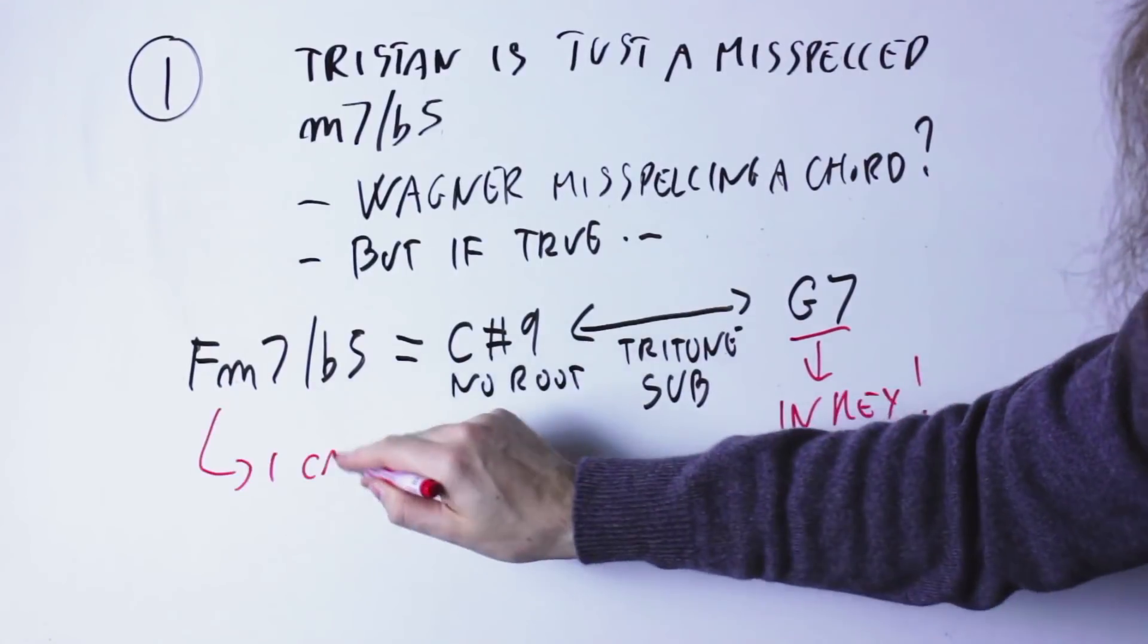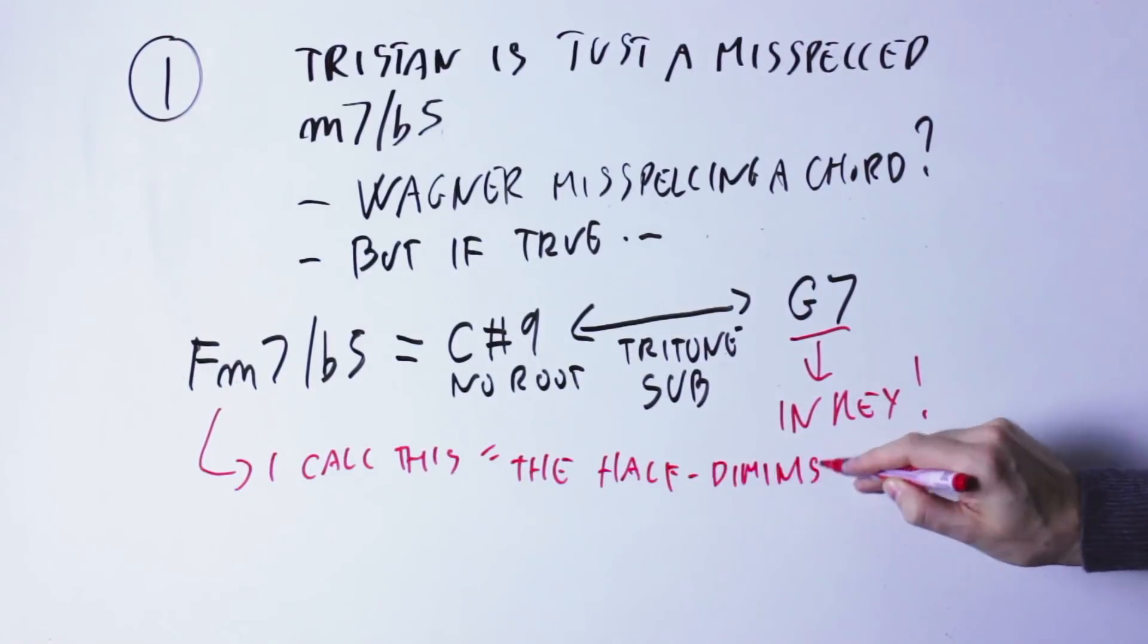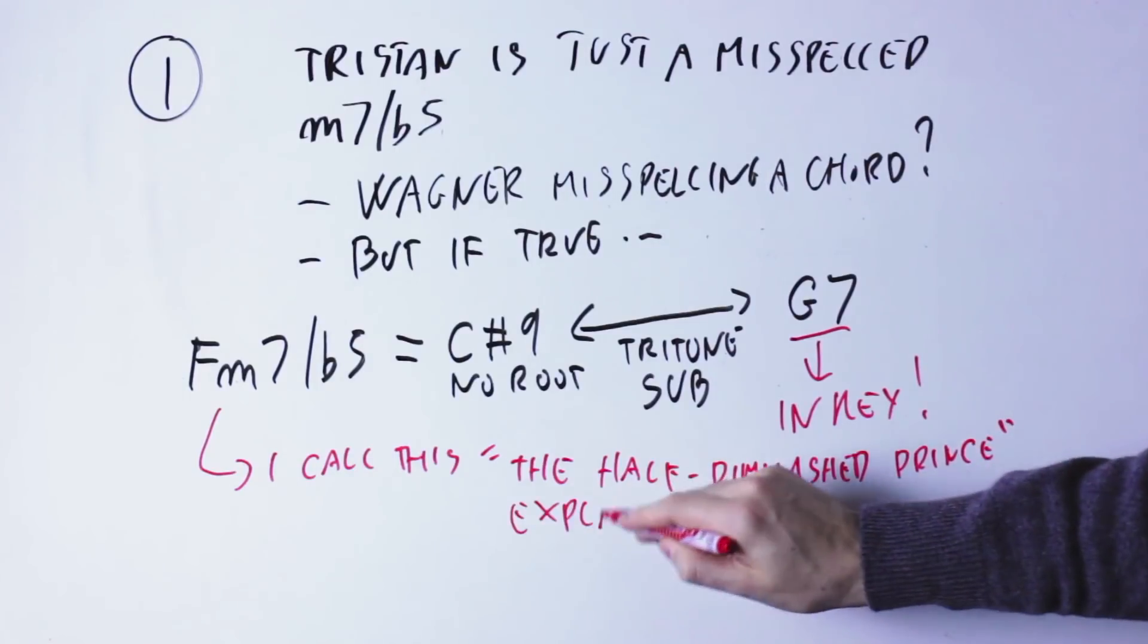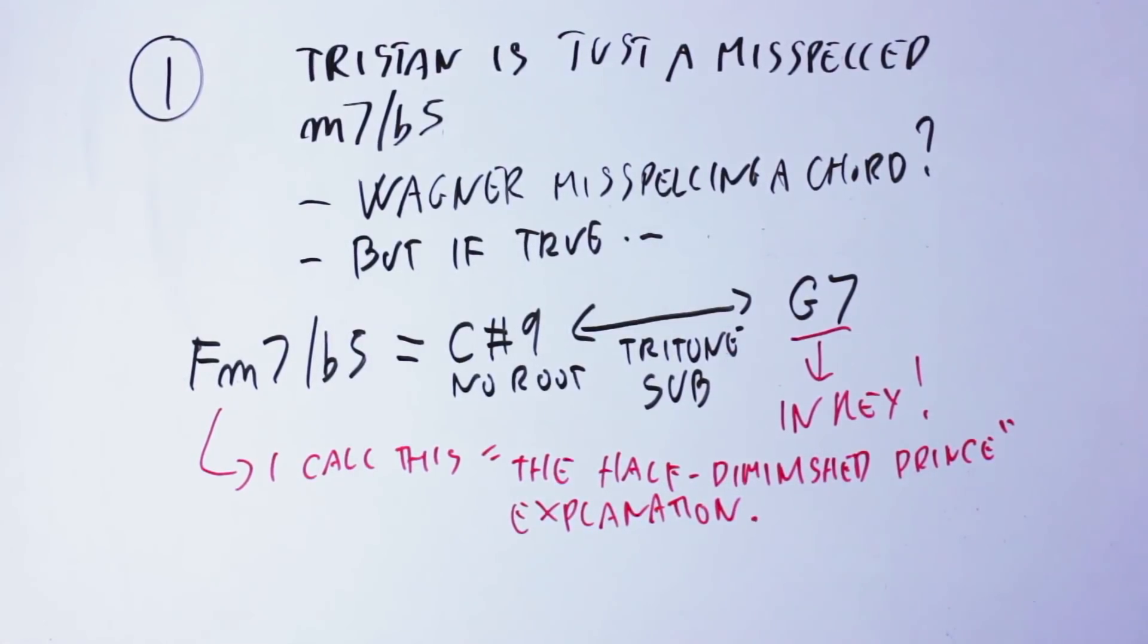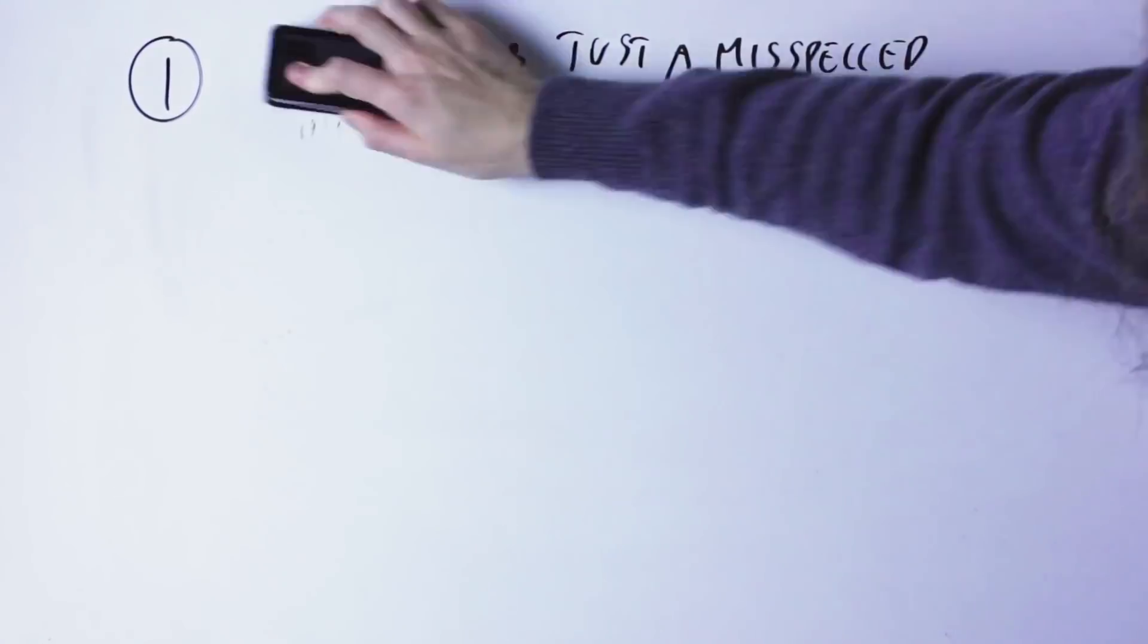So essentially, the Tristan chord in this interpretation would simply be an incomplete tritone substitution of a chord that was in A minor. Again, it's unlikely that Wagner misspelled the chord, but it's still an interesting explanation.